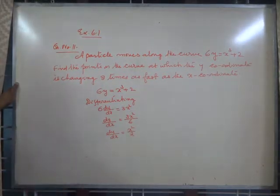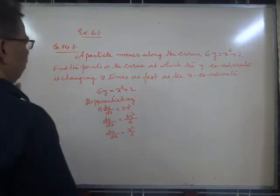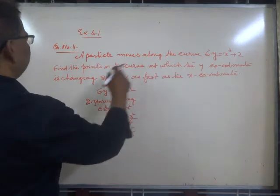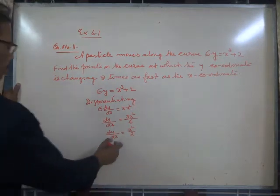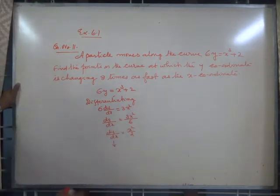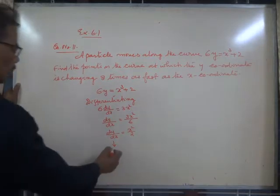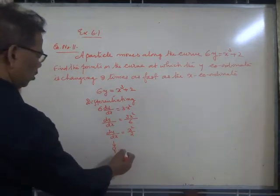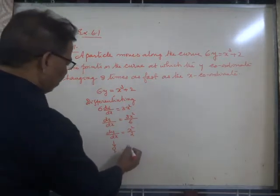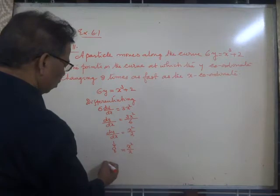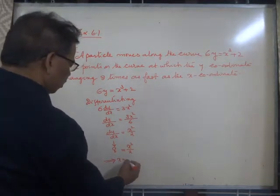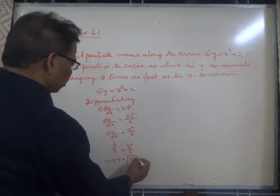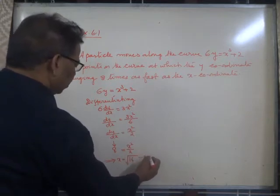So dy/dx = 3x²/6 = x²/2. In the question, it is given that the y-coordinate is changing 8 times as fast as the x-coordinate, that means dy/dx = 8. Setting x²/2 = 8 gives x² = 16, so x = ±4.